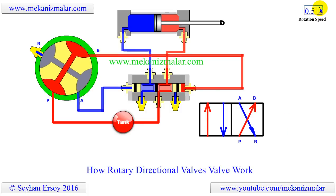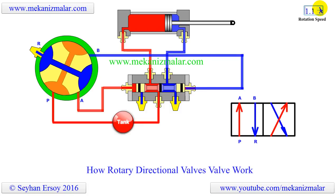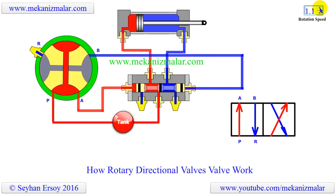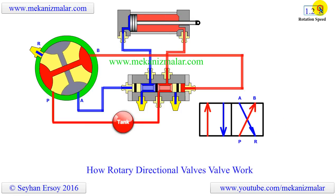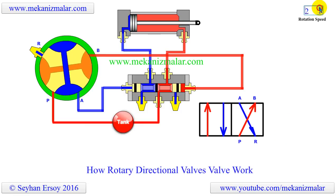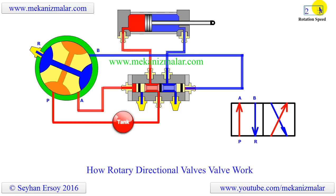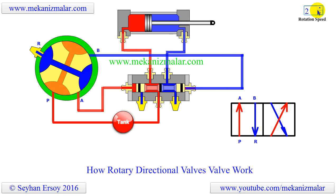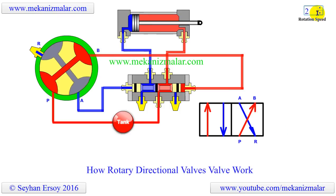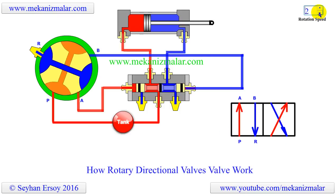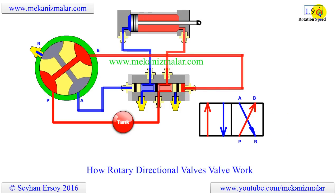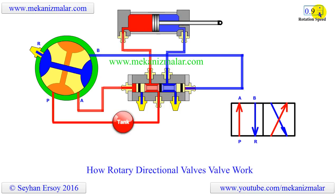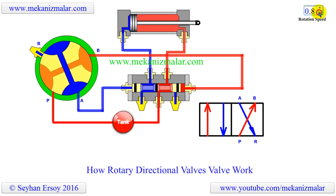Increasing the rotation speed of the rotary valve will cause the piston to reciprocate much faster. However, if we increase the rotation speed of the spool too much, the piston may not keep up with this pace of rotation. We may attach quick exhaust valves to the cylinder ports to release pressurized air in the cylinder much faster.